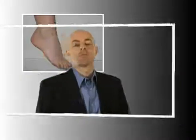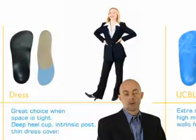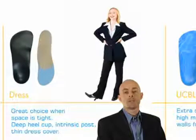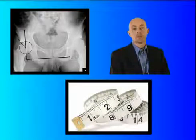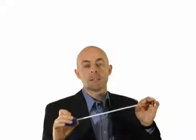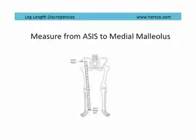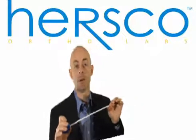I like to approach leg length discrepancies from a practical perspective. The first goal is always the patient's comfort. Even if the leg length discrepancy has been measured using an x-ray or a tape measure, considering the patient's comfort is of primary importance. The classic measurement uses a tape measure from the ASIS — the anterior superior iliac spine — to the medial malleolus. Some practitioners also take a measurement from the navel to the medial malleolus.